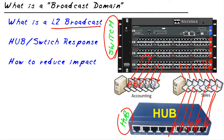Because the hub forwards based on just the bits — bits in, bits out — it's considered a layer 1 device. Because a switch makes forwarding decisions based on layer 2 addresses from the OSI model perspective, a switch is often called a layer 2 device, and that's why.